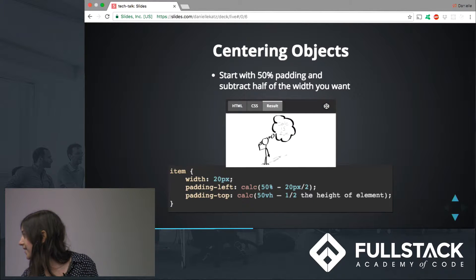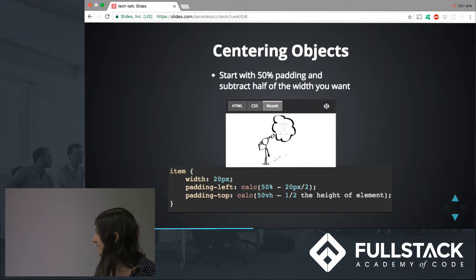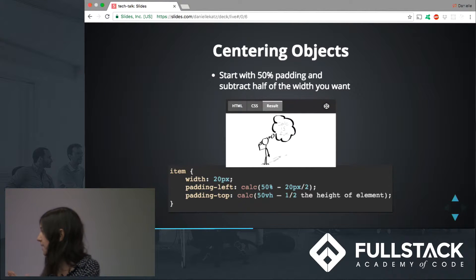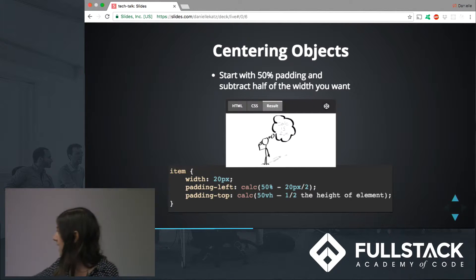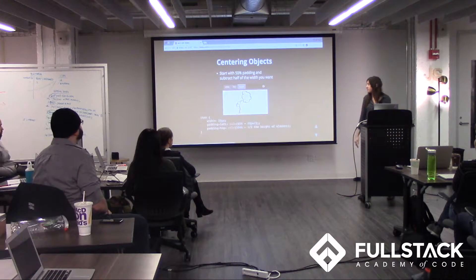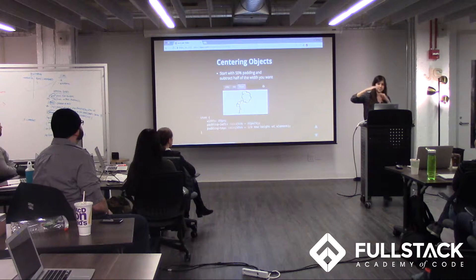For centering objects, you can see a little calc man centered on the page. What you do is set your padding-left to 50%, then subtract half the width of the element. The same thing goes with height — you put padding-top of 50% or 50 view height to bring it to the center of your page, then bring it up by half the height of the element.